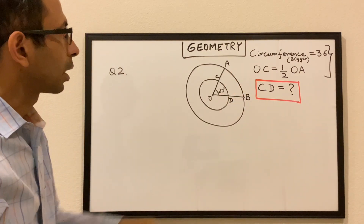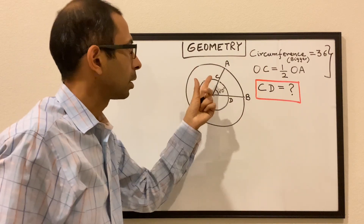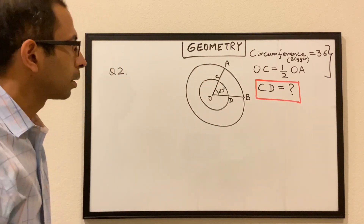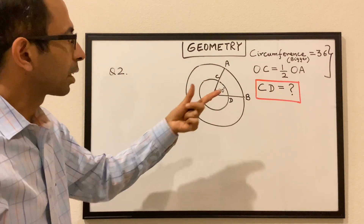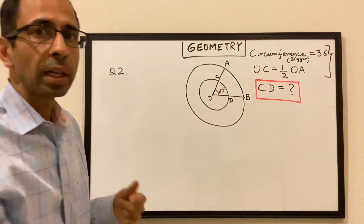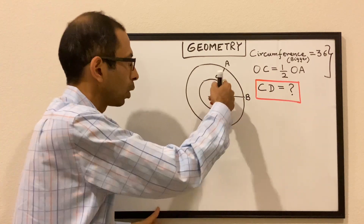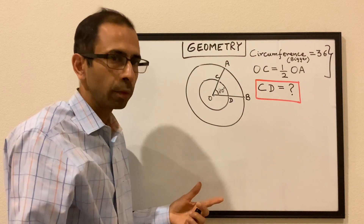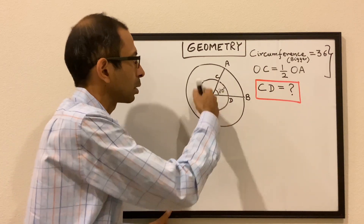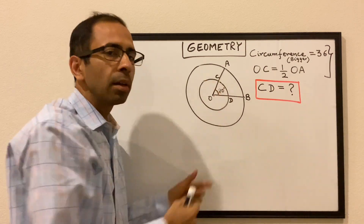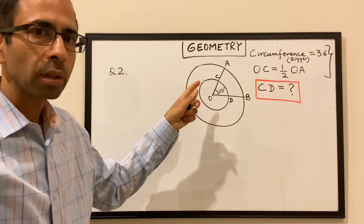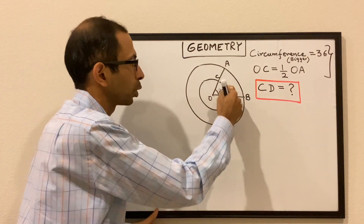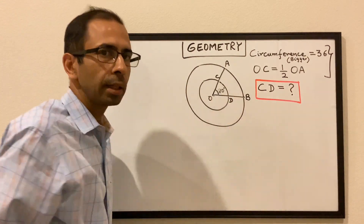So let's get going. We know the circumference of the bigger circle, so we can find the radius of the bigger circle. Once we find the radius of the bigger circle, we can find the radius of the smaller circle, because we know the relation between the 2 radii. Once we know the radius of the smaller circle, we can find the circumference of the smaller circle and hence finally find this portion of the length.